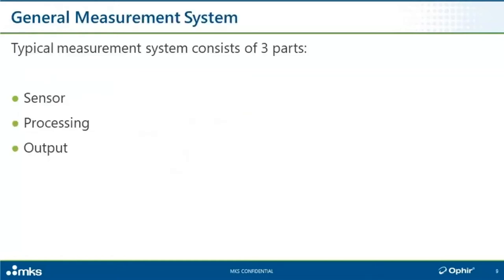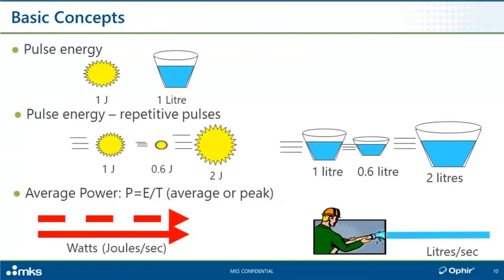Typical measurement systems — back in my military days, the instructors always told us that everything in the universe is made of three parts. The three parts of any generic measurement system are: a sensor, which is the transducer — the front end facing the thing we're trying to measure (in our case, a laser beam); then some kind of processing; and then there's an output. Simple enough. With that in mind, let's begin to understand the parameters we're trying to measure.